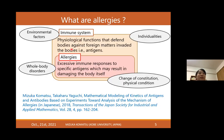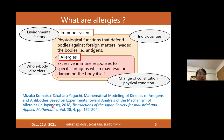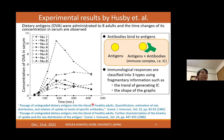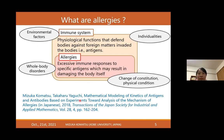Allergies are excessive immune responses to specific antigens. They are some kind of foreign disorder which may result in damaging the body itself. They are affected by environmental factors and individual differences, making it a very complicated phenomenon. I wanted to work on this phenomenon via mathematical modeling, which I did in a paper written in Japanese.